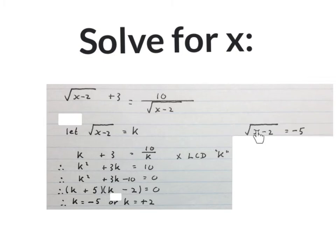So you write, square root of x minus 2 is equal to minus 5. This answer is not applicable, just leave it for now. Then we write, square root of x minus 2 is equal to 2, the other value we got for K.